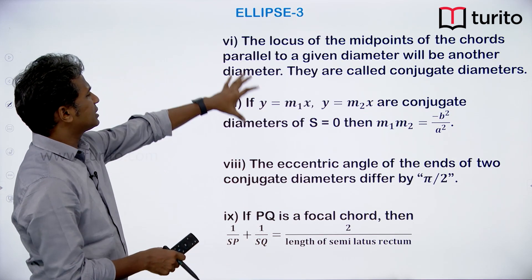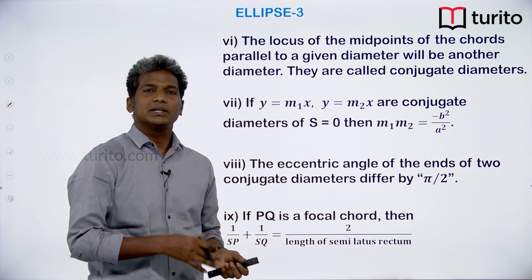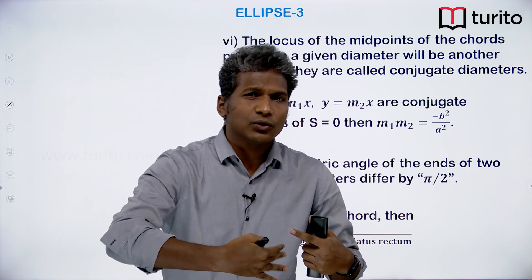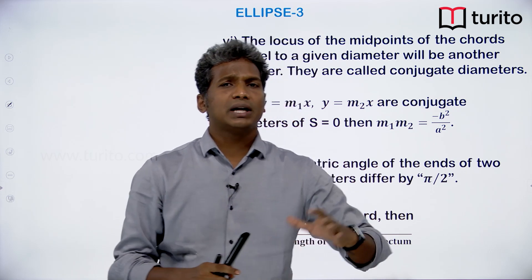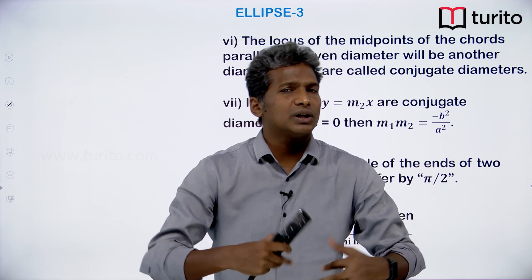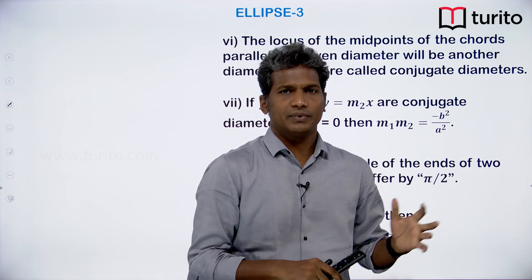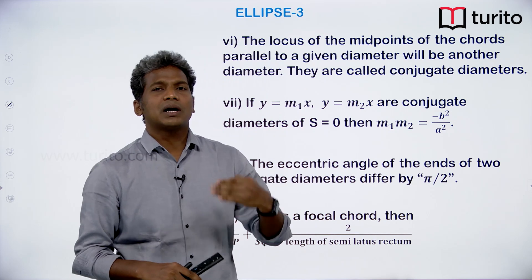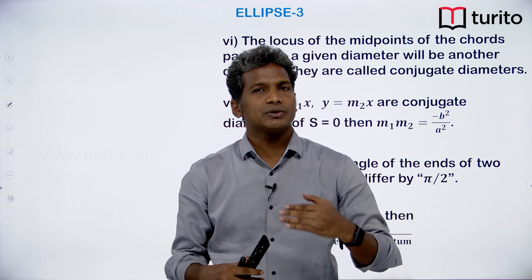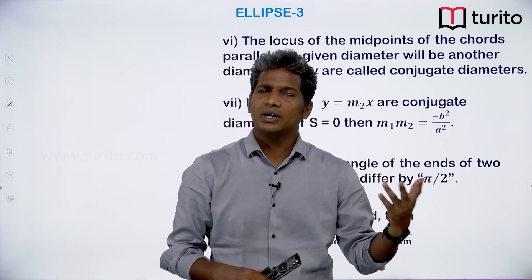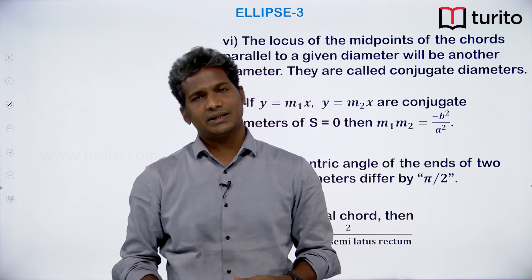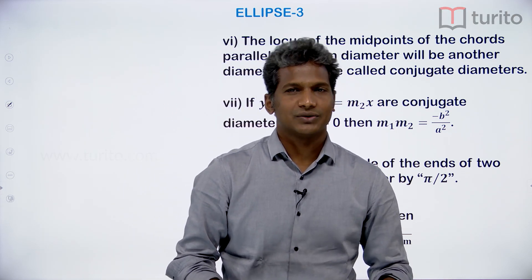The largest diameter is the major axis and the smallest is the minor axis. After diameter, the next concept is conjugate diameters, which we will discuss in the next lecture. Diameter is in the IIT syllabus but conjugate diameters is borderline — we will touch on it. We will continue from this point in the next lecture with more chord concepts and problem solving. Learning shall never stop.